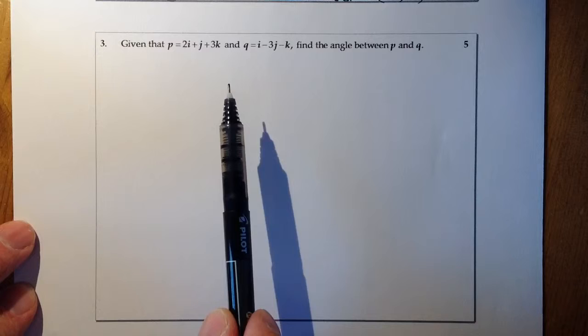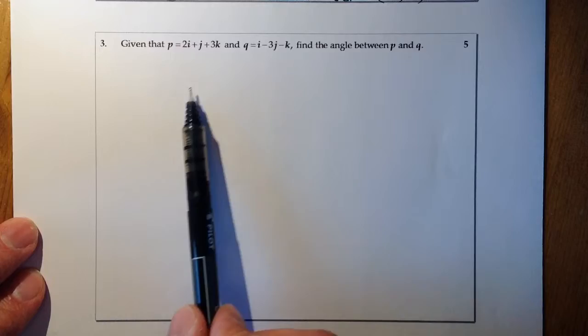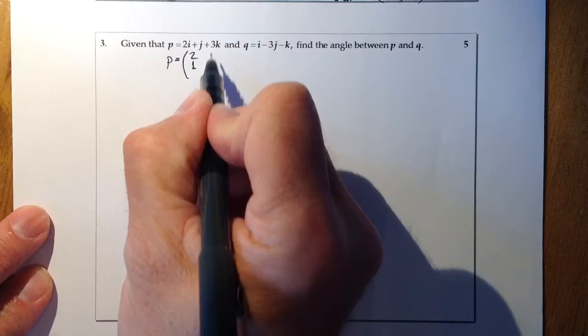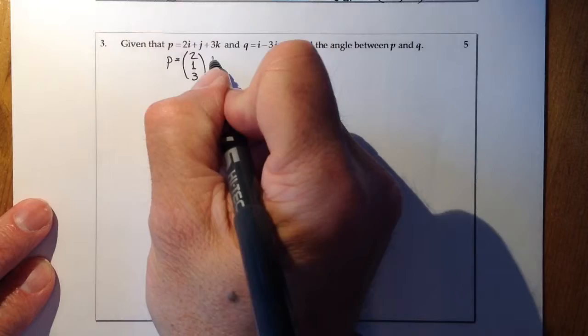So vectors question here. We've given the vectors in the ijk format. So if you're not used to seeing that, what we'll do is we'll write down the vectors in component form so you can see what they are. So I've got 2 there, that'll be a 2. I've got 1j, 1, and I've got 3 for k there. So there it is in component form for P.